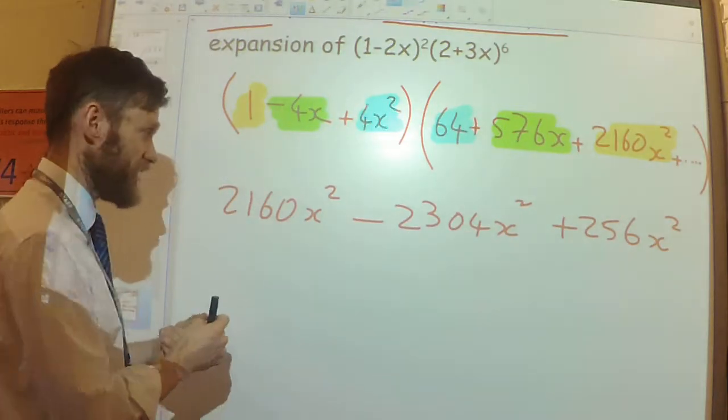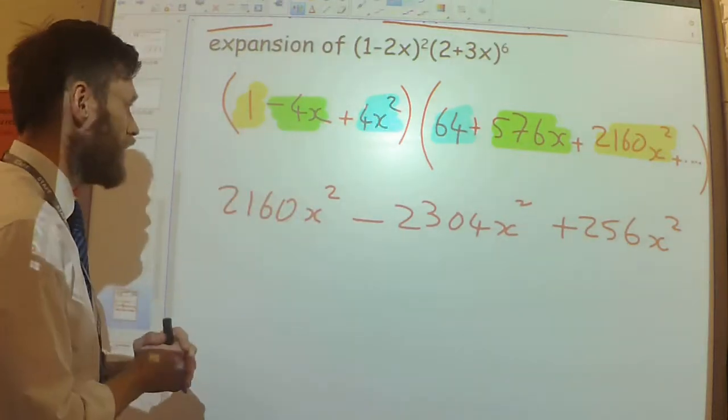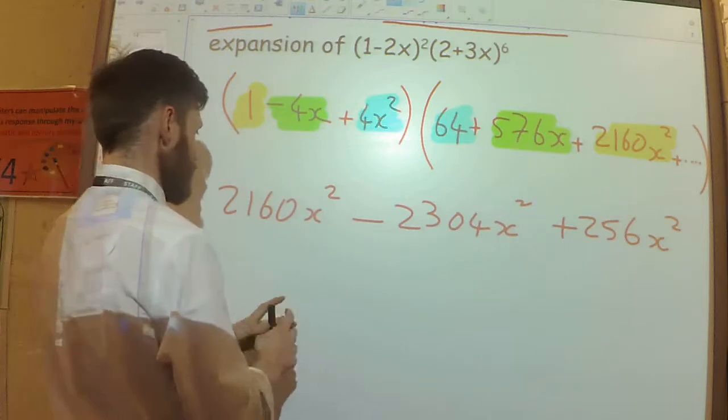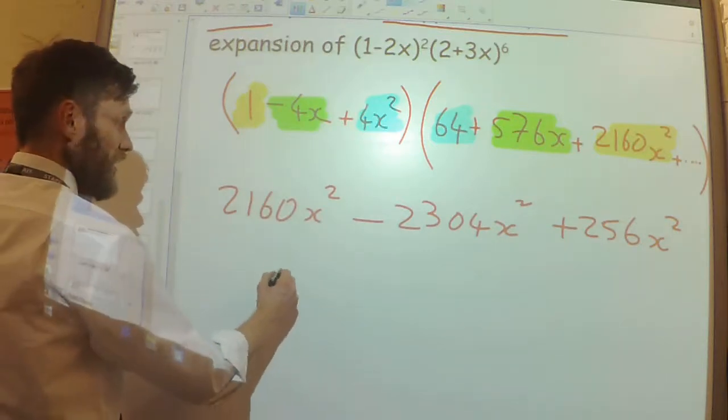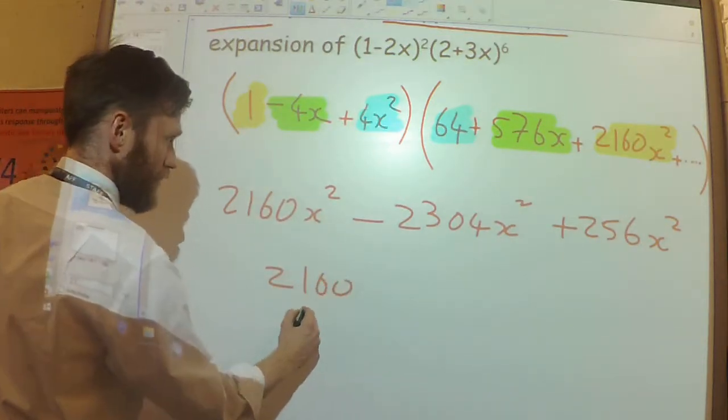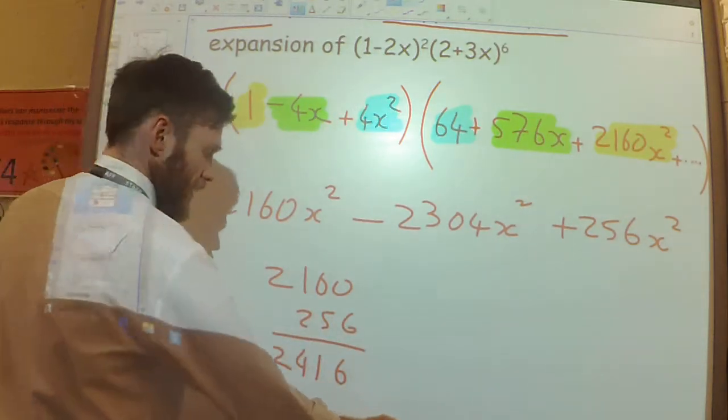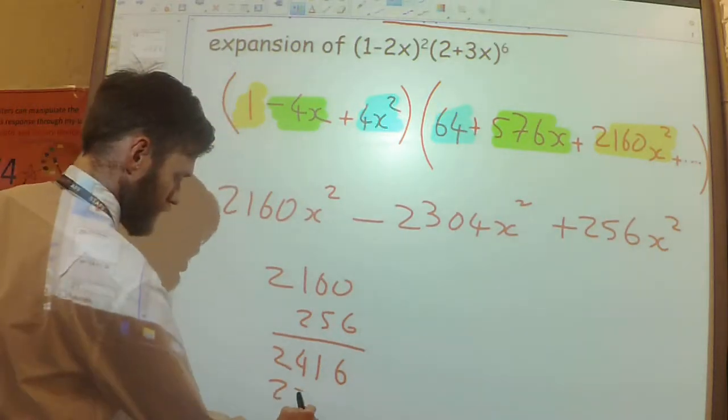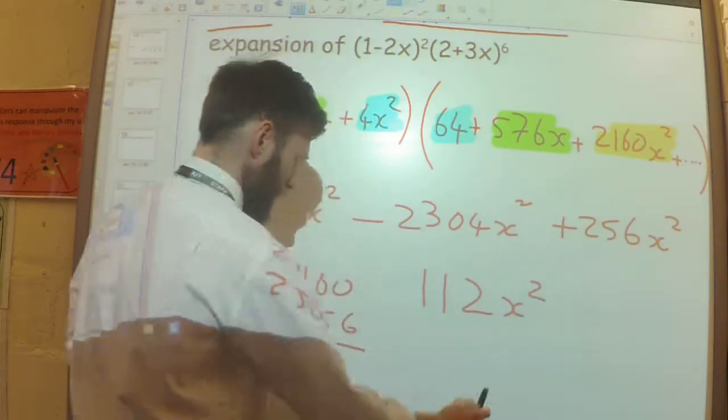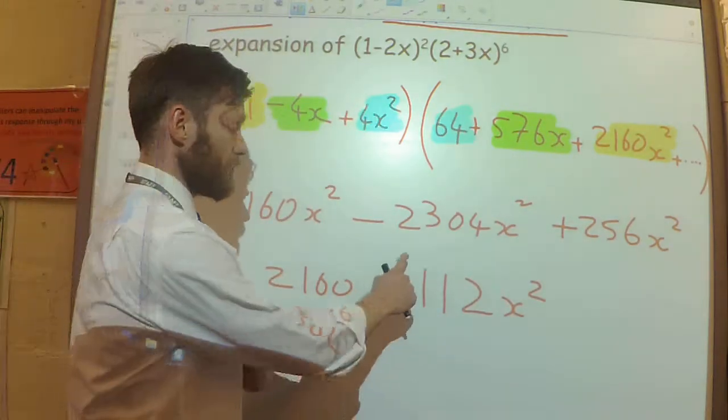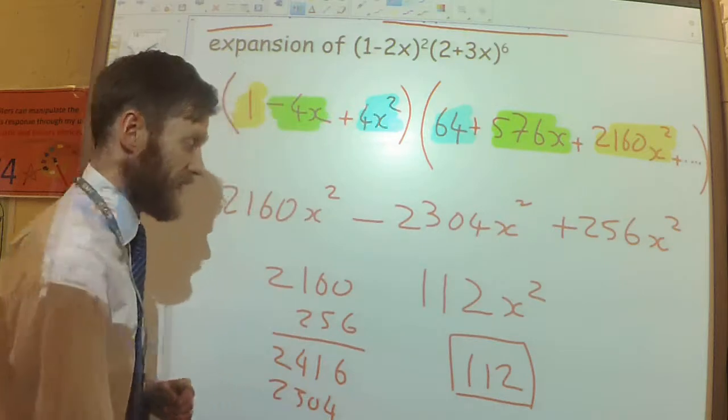In terms of actually working out what the coefficient is, then, let's just add each of those together or collect the like terms. 2160 plus 256, and take away the 2304 is going to be 112x squared, I think. The coefficient of x squared is 112, and that is my answer.